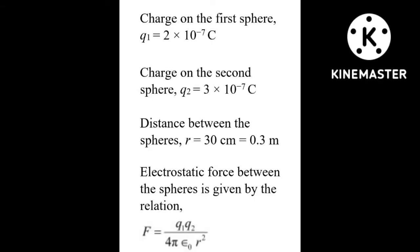Whenever you get a numerical problem, read the question carefully and write down the given quantities with units. Then find the equation using the given quantities. Here we have q1, q2, and r, and we need to calculate force. The equation connecting these four quantities is Coulomb's law: F = (1/4πε₀) × q1×q2 / r².